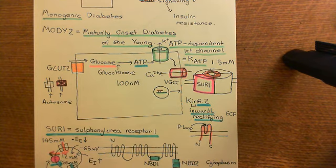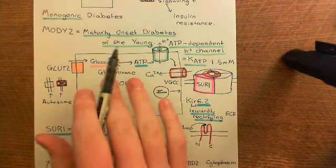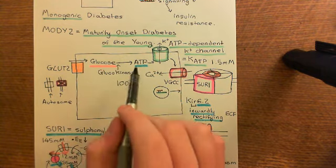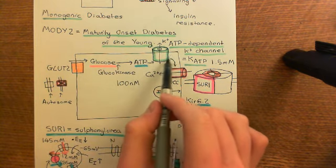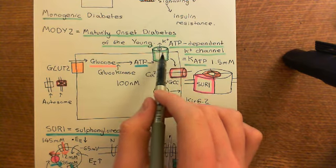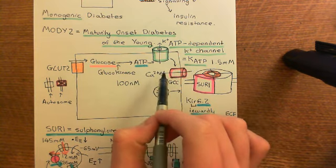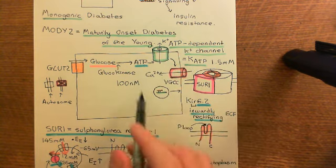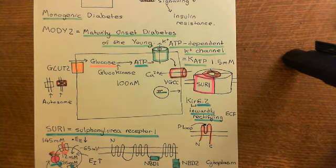When the rate of this first step is reduced because glucokinase is functioning at a lower rate — and this is one of the rate-limiting steps — the ATP produced in response to any glucose concentration is reduced. That means the depolarization produced by closing KATP channels is reduced, the calcium influx is reduced, and therefore the amount of insulin released in response to a given glucose concentration is reduced.